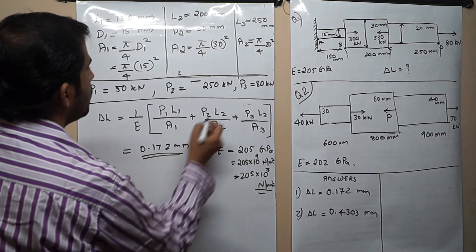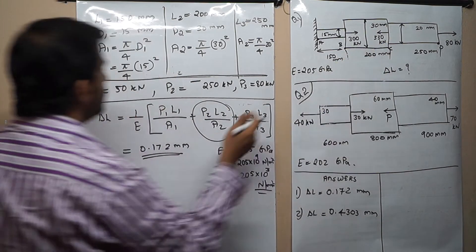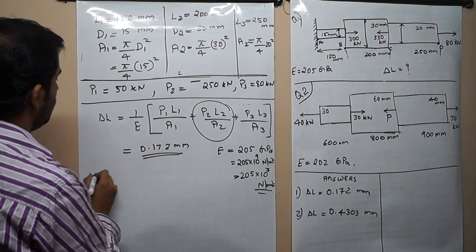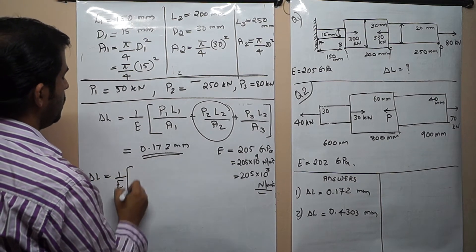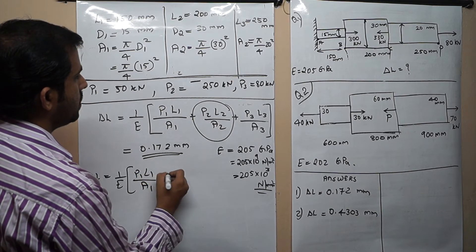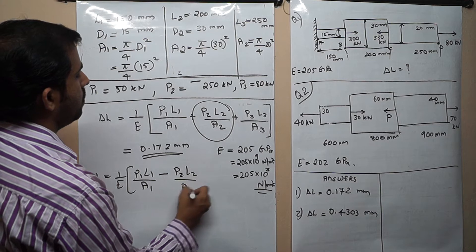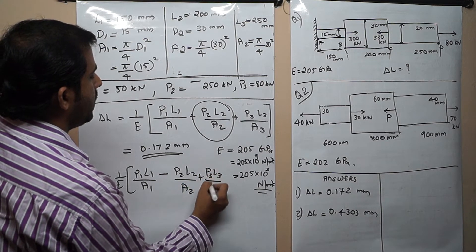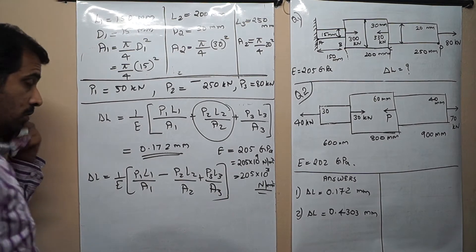The deflection for the second section is compressive in nature. So our final equation is: delta L equals (1/E) into [P1·L1/A1 minus P2·L2/A2 plus P3·L3/A3]. This will be our final equation.